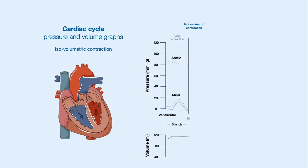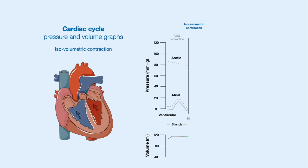During isovolumetric contraction, the ventricular volume remains unchanged and the ventricular pressure increases to exceed atrial pressures. At this point, the AV valve closes, which is the cause of the first heart sound. As the AV valves close, this causes a bulging of the valve into the atria, causing an increase in atrial pressures, and the aortic pressures continue to be on a decline.